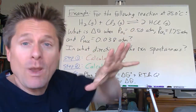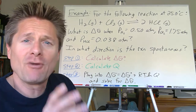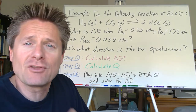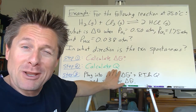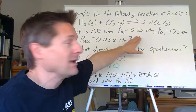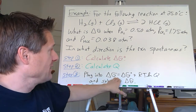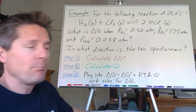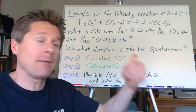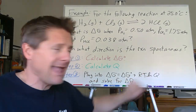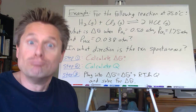Here are the steps. We can calculate delta G not at 25.0°C straight from the thermodynamic table — take the summation of products minus reactants. Then calculate Q, the reaction quotient, plugging in the partial pressures. Once we have delta G not and Q, plug into the equation: delta G equals delta G not plus RT ln Q. Do it in several steps to track significant figures. I'll calculate delta G not on the next board, then erase it, calculate Q on the following board, and plug into the equation on the third board.